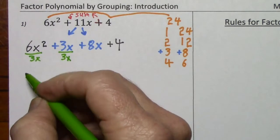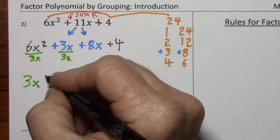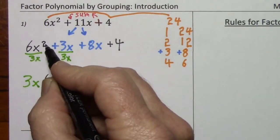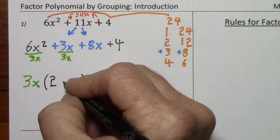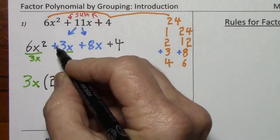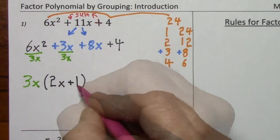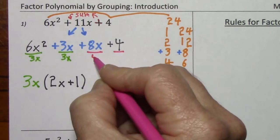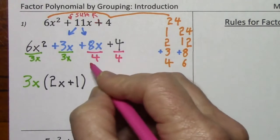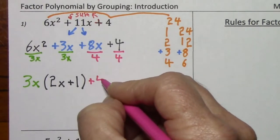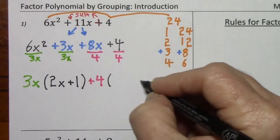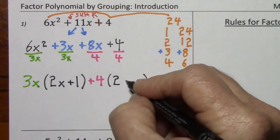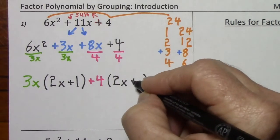Usually when you factor something out, you put it in front of parentheses. Dividing out the 3x, you'll be left with 2x, and dividing out the 3x, you'll be left with plus 1. Now grouping together the next two terms, we have a GCF of 4. Dividing out the 4 leaves us with 2x, and dividing out the 4 leaves us with plus 1.